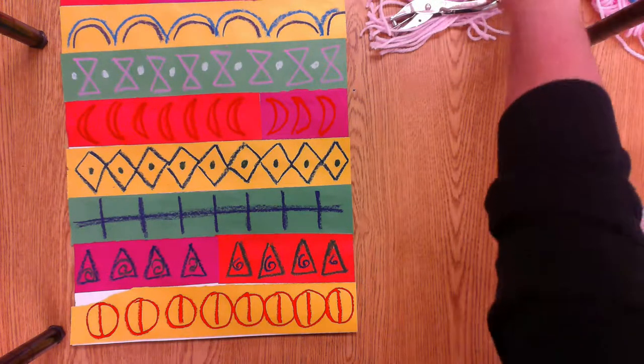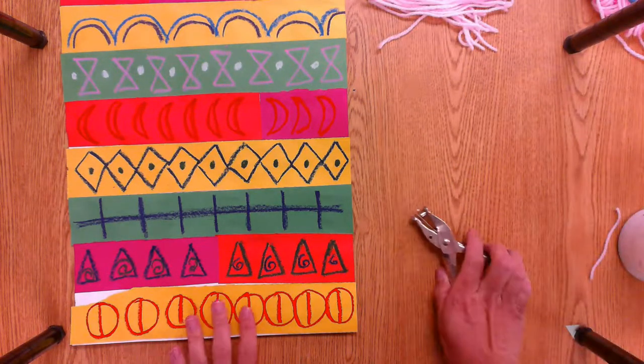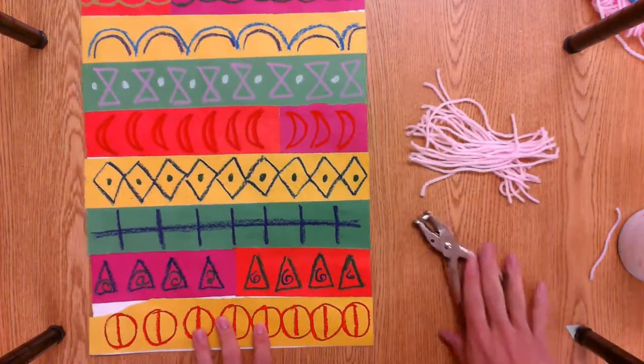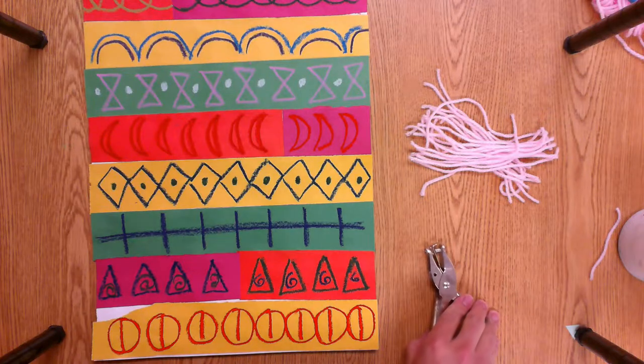And now I'm going to use a hole puncher and I'm going to need some yarn. The yarn's already cut for you. You're going to need 12 on each side.